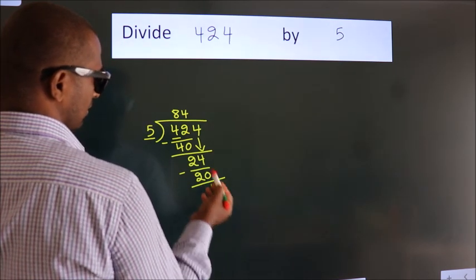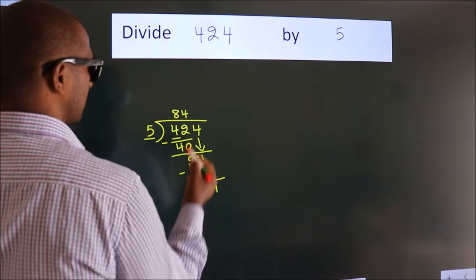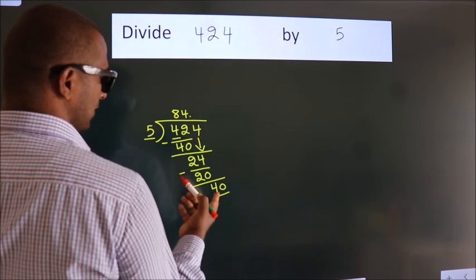After this, no more numbers to bring down. So what we do is, we put a dot and take 0, making 40. When do we get 40?